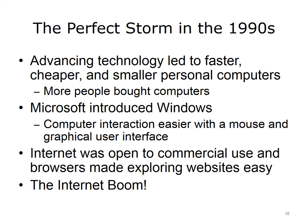The combination of several different factors led to the Internet boom of the late 90s. Personal computers became faster, cheaper, and smaller as technology advanced, meaning that more households and more people could afford to purchase them. Microsoft advanced their operating system and introduced Windows, which had a graphical interface. Now users could interact with a computer using a mouse, which made navigating a PC much easier. The Internet was open to commercial use, and web browsers made exploring websites easy. This all led to the huge Internet boom and the ubiquitousness of computers in our society today.